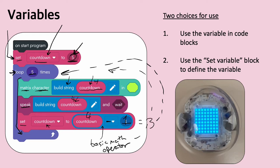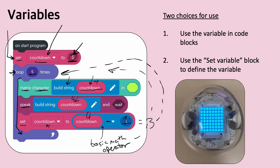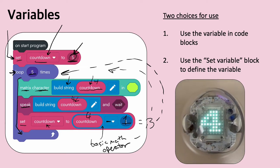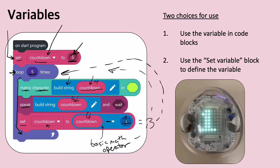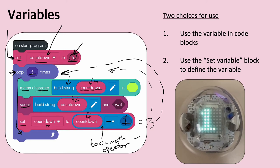I actually ran this so you can get a sense of what it looks like on the bolt when it runs: five, four, three, two, one. It ran through the loop just like you'd expect — it said the number and showed it as a matrix character in the color we specified. Every time the loop went through, it changed because I had the set variable command assigning a different number each time.